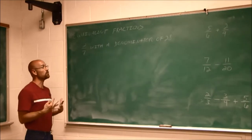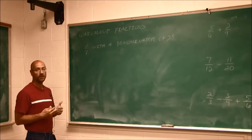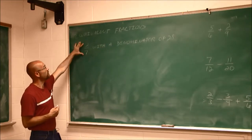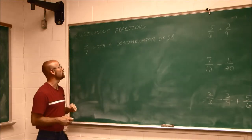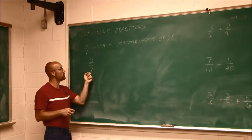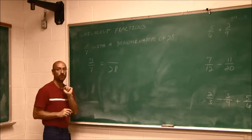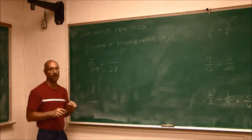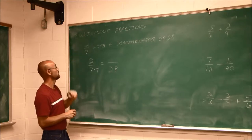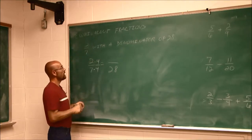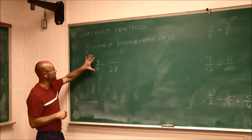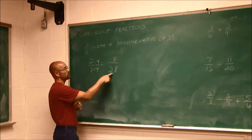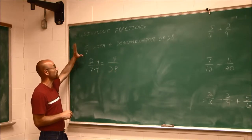Now we get into the meat of it. When we need to add or subtract fractions, we have to change those denominators to be the same by writing equivalent fractions. Let's say I have 2/7 and I want to write it with a denominator of 28. What would I multiply 7 by to make it 28? That number is 4. But we can't change the value of our fraction — it has to remain equivalent. So what I do to the bottom, I do to the top. I'm essentially multiplying by 4/4, which is 1. So 2 times 4 is 8, and 7 times 4 is 28. Therefore 8/28 is the same as 2/7 — they are equivalent fractions.